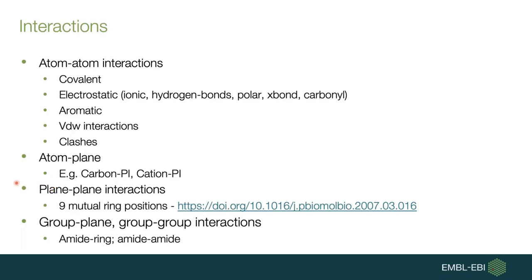Arpeggio is a tool that allows you to identify all sorts of different interactions across several groups. The first large group contains atom-atom interactions, including covalent links as well as all sorts of electrostatic interactions. Another group contains atom-plane interactions, where you can identify interactions between aromatic rings and atoms. Arpeggio can also calculate different stacking interactions defined by Chakrabarti and Bhattacharya, as well as group-plane and group-group interactions.